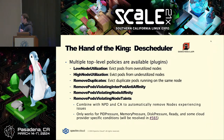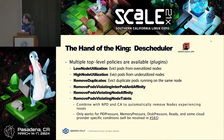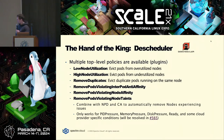High node utilization ties in with Cluster Autoscaler: if you have that Descheduler configuration, Cluster Autoscaler can start taking nodes offline when there are so few pods that it determines they're safe to remove. There are also anti-affinity policies and a policy to remove pods violating node taints, where the trinity of these solutions comes into play.